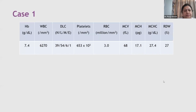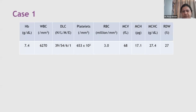The platelet count is 653,000, the RBC count is 3 million, MCV is 68, MCH is 17.1, MCHC is 27.4, and RDW is 27. Using the WHO classification, this four-year-old with a hemoglobin of 7.4 falls in the moderate anemia category.